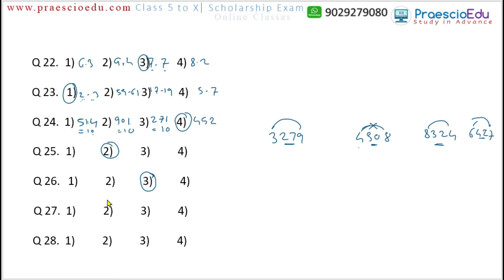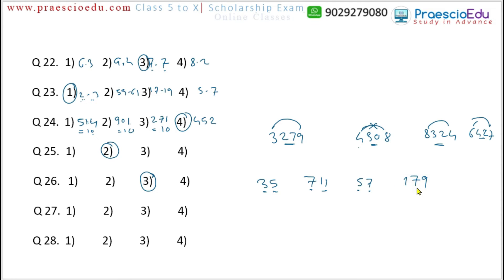Question 27: options are 35, 711, 57, and 179. For 35: digits 3 and 5 are consecutive prime numbers. For 711: 7 and 11 are both prime. For 57: 5 and 7 are both prime. But for 179: if read as 17 and 9, then 9 is not prime; if read as 1, 7, and 9, then 1 is not prime. So option 4 is the different one.